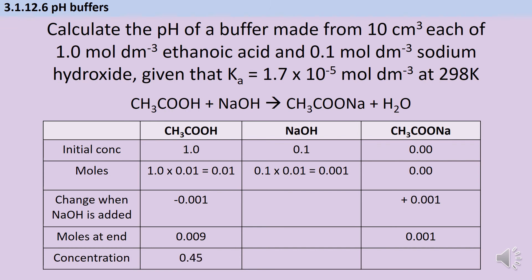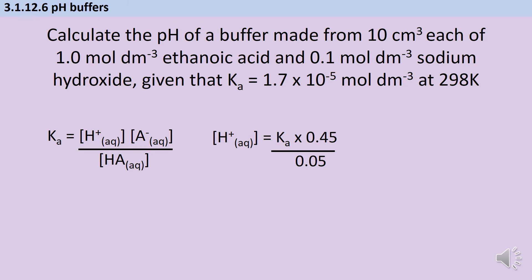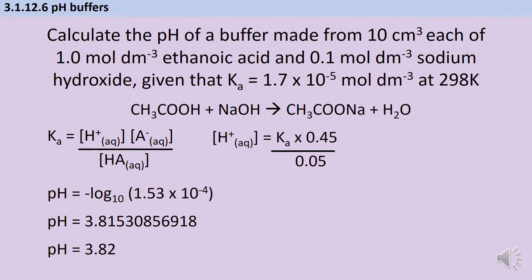Having worked out the new concentrations, I follow the same process as in type 1 and type 2 questions: write an expression for Ka, rearrange to make hydrogen ions the subject. With [H⁺] = 1.53 × 10⁻⁴ mol dm⁻³, I take the negative log base 10 to get a pH of 3.82.